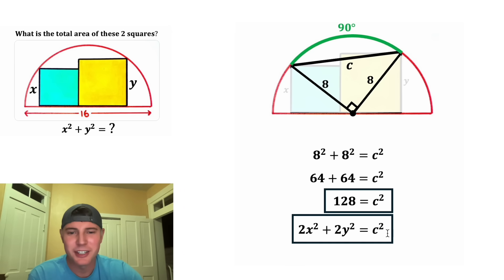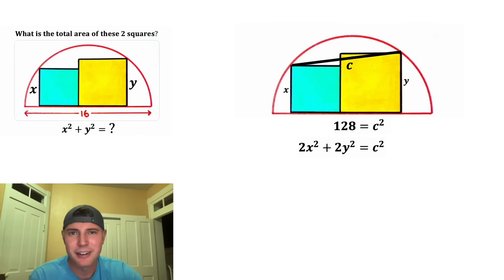And now we have two boxes that contain a c squared. Let's clean up everything and bring them up here. 2x squared plus 2y squared equals c squared. And 128 equals c squared. So we can set those equal to each other. We have 2x squared plus 2y squared equals 128.